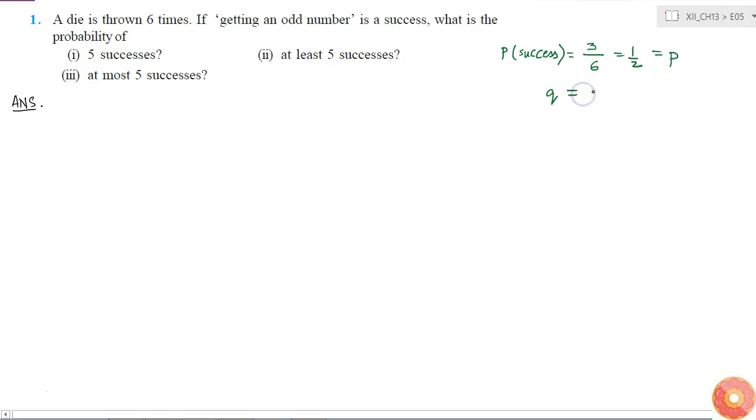Similarly, the probability of failure, which I'm calling Q, equals 1-P, which is again 1/2. Now, throwing a die is an independent event, and the probability of success and failure is constant in each trial. The number of trials is also finite, equal to 6, so I can consider this experiment as Bernoulli trials and hence use the binomial distribution.